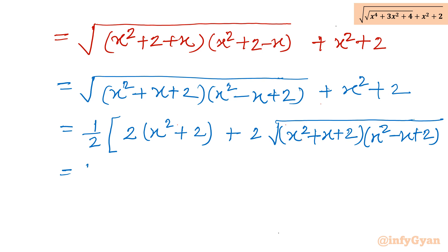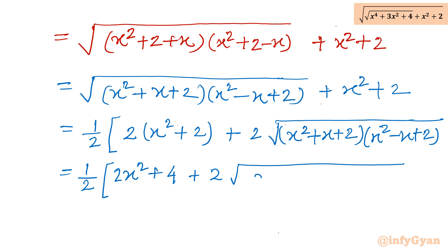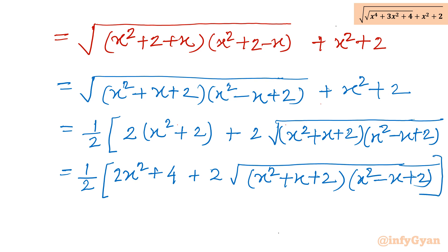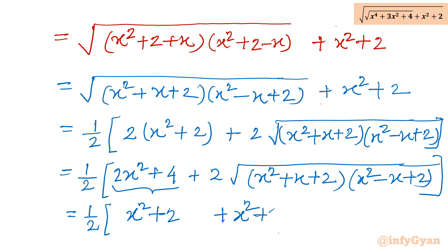Now I will do one algebraic manipulation where I will multiply this complete expression by 2 and divide by 2. So I will write one half, and then multiply with 2 times x squared plus 2, giving 2x squared plus 4. Then I will be writing 2 times square root of x squared plus x plus 2, times x squared minus x plus 2.